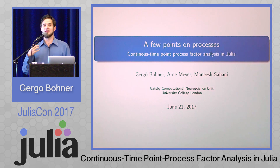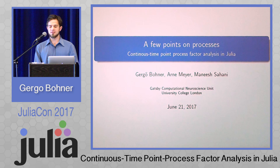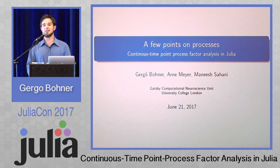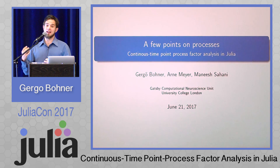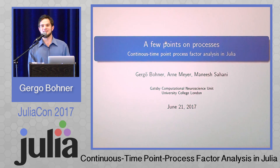We know that these neurons are connected to one another, and we'd like to learn about what they collectively represent — it's called the population code. First I'll talk about what point processes are, then describe a method we can efficiently use to do inference in relatively complicated models, and then talk about how it ties to Julia. Before questions, I also have some questions myself about how this should have been done properly.